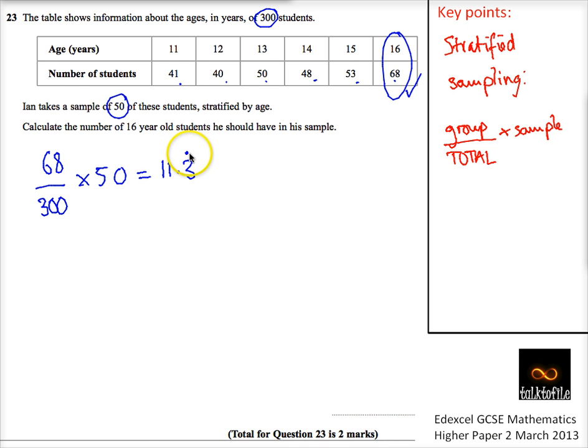Really important - we clearly can't take 11.3 students, so our sample is going to include 12 students, which kind of makes sense really.